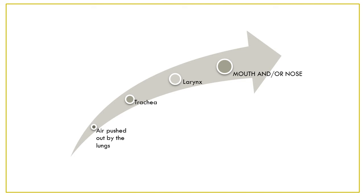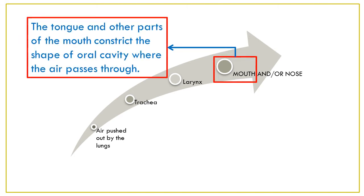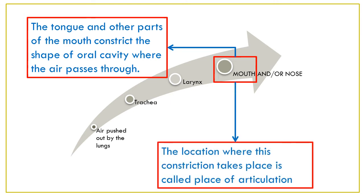Once the air has passed through the larynx, it comes up and out through the mouth and/or the nose. The tongue and other parts of the mouth constrict the shape of the oral cavity where the air passes through, and the location where this constriction takes place is called the place of articulation. We are going to investigate the consonant sounds in terms of where they are articulated, or the place of articulation.